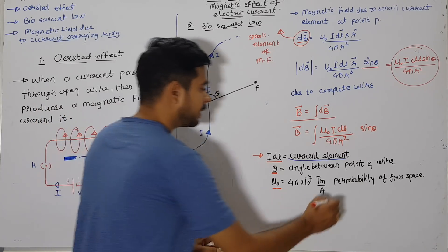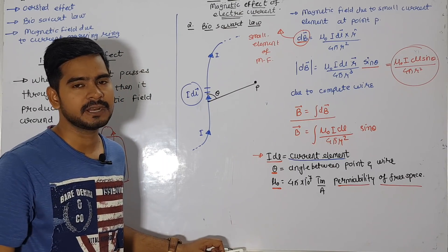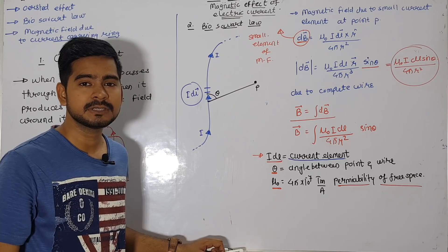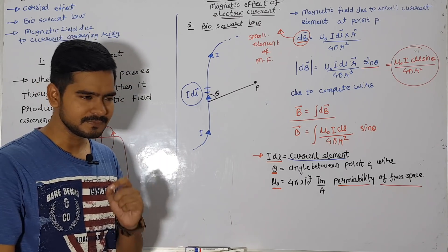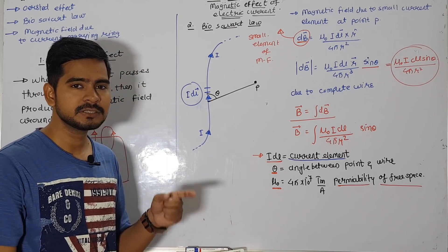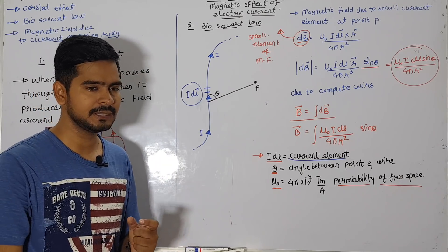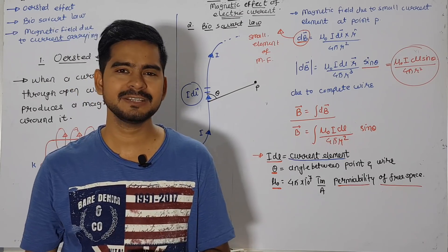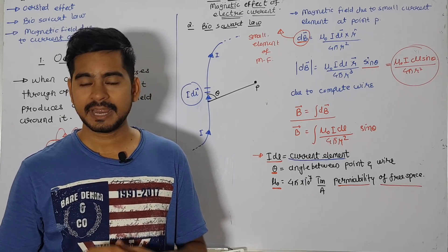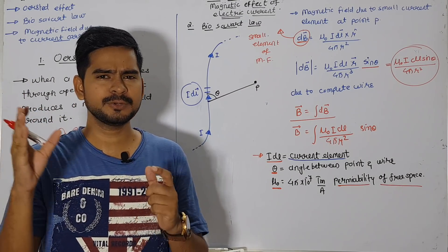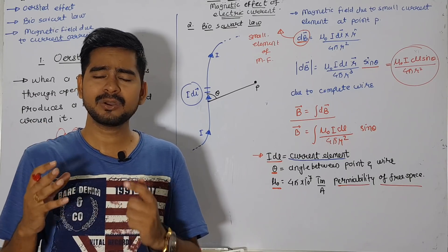Just as the first chapter had ε₀ (epsilon naught) = 8.85 × 10⁻¹² C²/(N·m²) as permittivity of free space, here μ₀ is permeability of free space. One important note: ε₀ shows the property of electric field while μ₀ shows the property of magnetic permeability. In fact, we cannot fully separate electric field and magnetic field — we are surrounded by electromagnetic waves, which are a combination of both electric and magnetic fields.